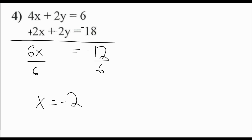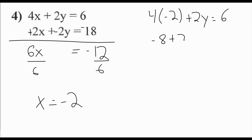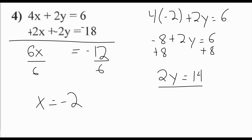With x equals negative 2, we plug back into the first equation: 4 times negative 2 plus 2y equals 6, so negative 8 plus 2y equals 6. Adding 8 to both sides gives 2y equals 14. Dividing by 2 gives y equals 7. So the solution to this system is (negative 2, 7).